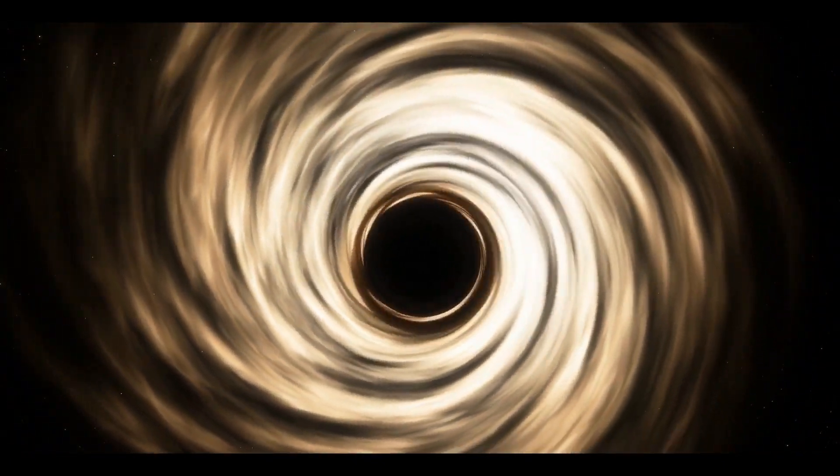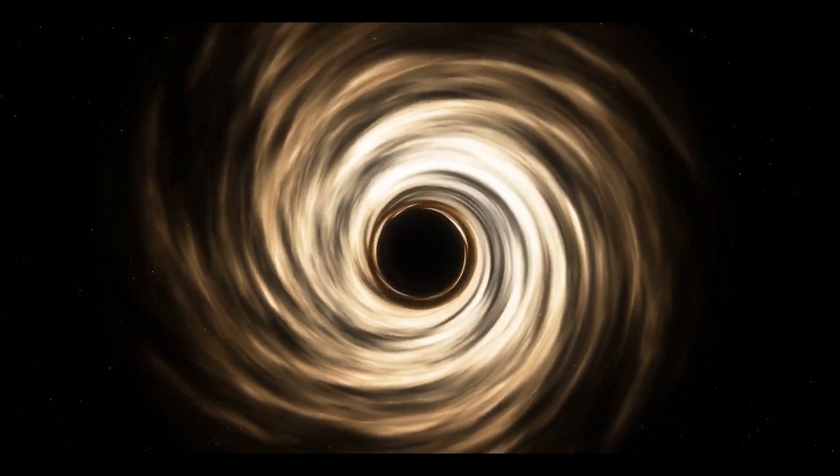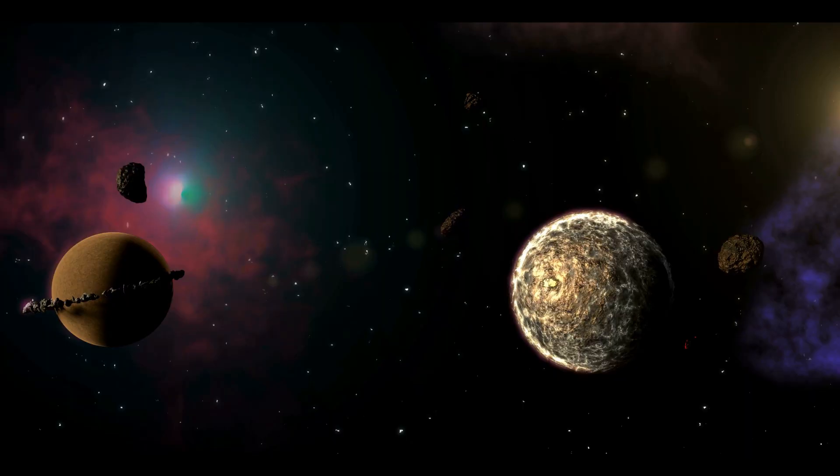Stellar black holes tend to have masses several times greater than our sun. Supermassive black holes, on the other hand, can have masses ranging from millions to billions of solar masses.